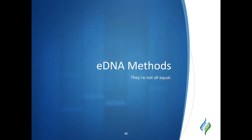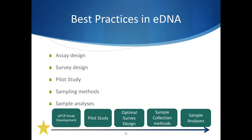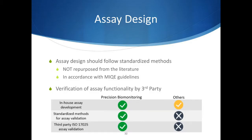We're now going to change gears and wrap up this presentation by having a look at the various eDNA methods and will show how having a customizable approach enables greater target species detection probability. If we look at eDNA methods as a whole, we can categorize the process into five main steps: assay design, pilot study, survey design, sampling methodologies, and sample processing and qPCR analyses. Each of these steps are equally important in order to achieve the maximum probability of target species detection and to minimize the risk of false negatives and contamination.